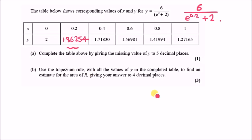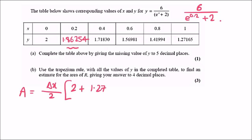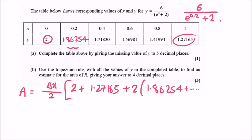The trapezoid rule estimates the area under a curve: A equals h over 2 times [(y at start plus y at end) plus 2 times the sum of all intermediate y values]. Here h equals 0.2, the endpoints are y equals 2 at x equals 0 and y equals 1.27165 at x equals 1.